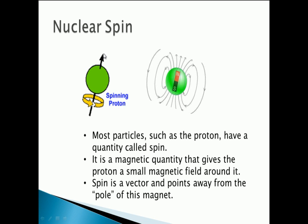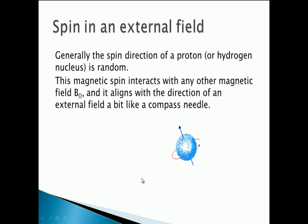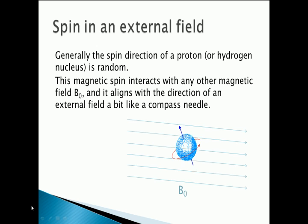There are billions and billions of protons inside your body, and each of them has a spin. Normally, the spin just points in some random direction. But when you apply a strong external magnetic field to the area around the proton, it will align with the magnetic field. Here we've given the symbol B₀ to the magnetic field — it points from left to right — and as you can see, the proton's spin vector will align along the direction of the magnetic field.